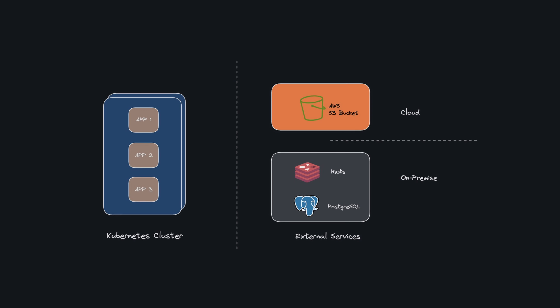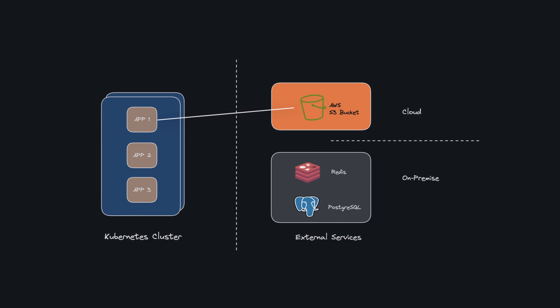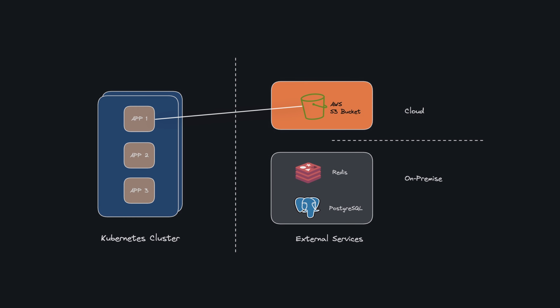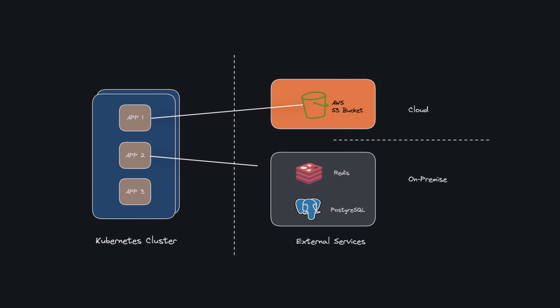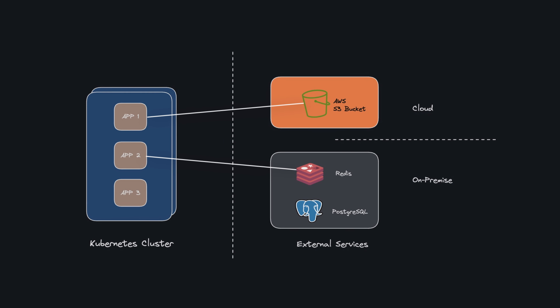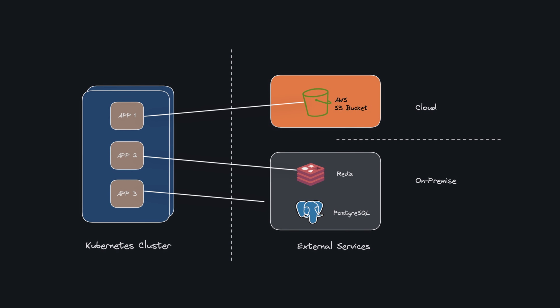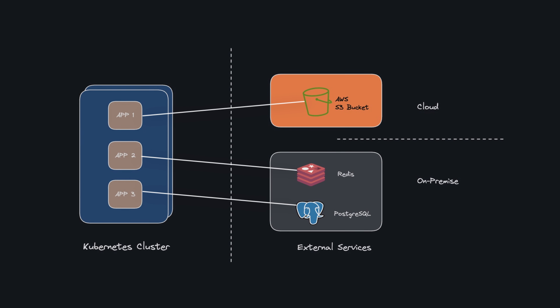Many of the applications we deploy in Kubernetes are not standalone applications. An application may require some kind of connection to an external service like an S3 storage bucket, a Redis cache, or a database like Postgres.